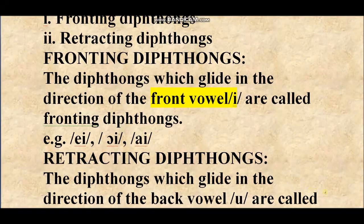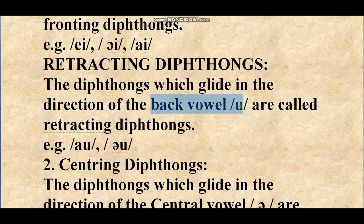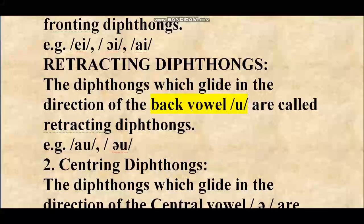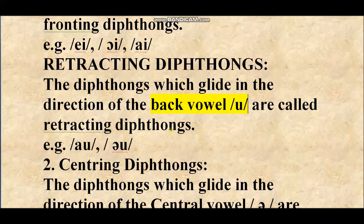Now, retracting diphthongs: the diphthongs which glide in the direction of the back vowel /ʊ/ are called retracting diphthongs. If you remember what back vowels, front vowels, and central vowels are from the last class, please do watch that video. For retracting diphthongs, the examples are /əʊ/ and /aʊ/ — these two are the retracting diphthongs.